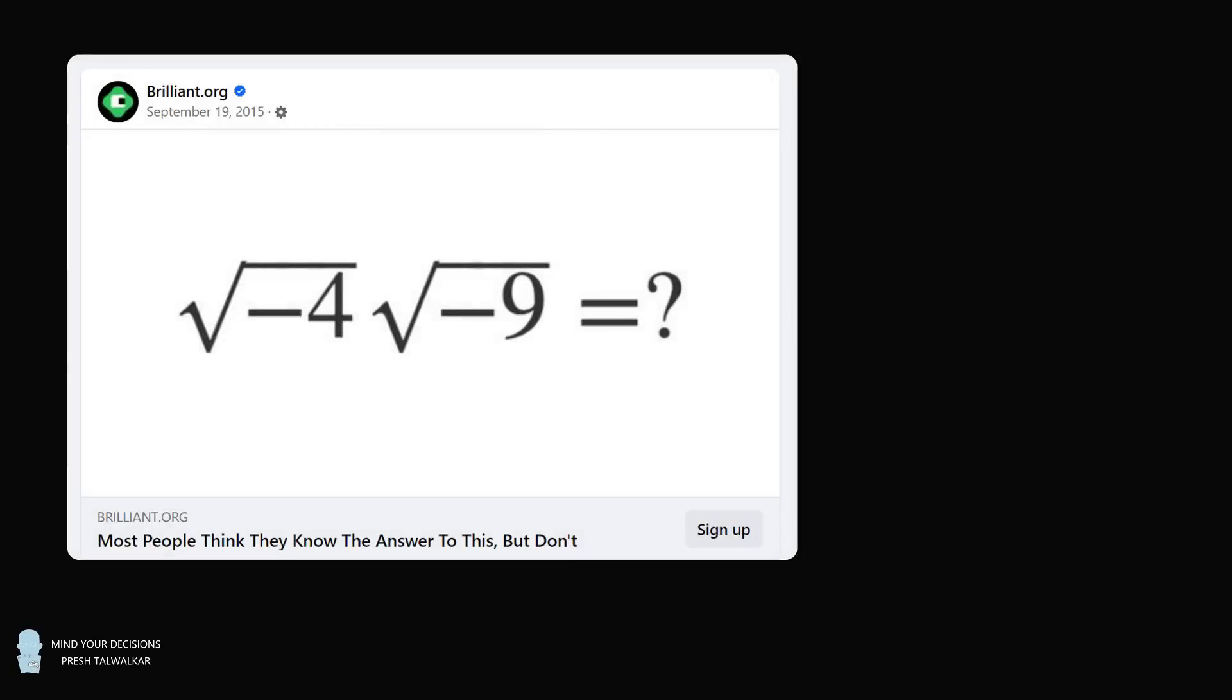Hey, this is Presh Talwalker. What is the square root of -4 multiplied by the square root of -9 equal to? This deceptively simple problem was posted on the Facebook page of brilliant.org all the way back in 2015. They had the tagline, Most people think they know the answer to this, but don't.